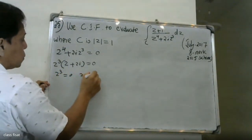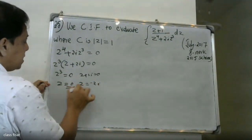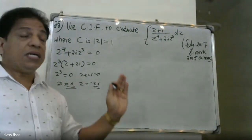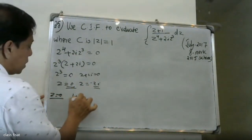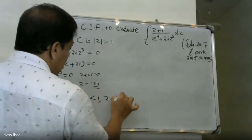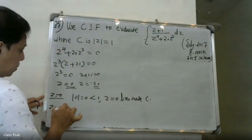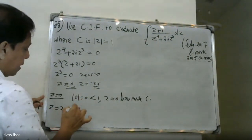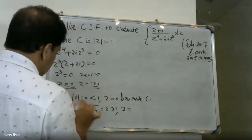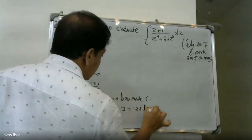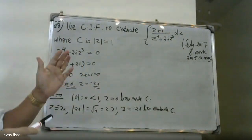Factoring further, z plus 2i equals 0 gives z equal to minus 2i. Now we check: the modulus of z=0 is 0, which is less than 1, so z=0 lies inside the contour. The modulus of z=-2i is equal to 2, which is greater than 1, so z=-2i lies outside the contour.